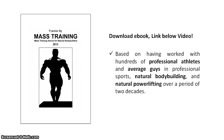The best hamstring exercises: Romanian deadlifts or straight leg deadlifts — barbell or dumbbell — sumo deadlifts, glute ham raises, hyperextensions, good mornings, and leg curls. The best bicep exercises: standing barbell or dumbbell curls, preacher curls, seated dumbbell curls, incline dumbbell curls, hammer curls, concentration curls, cable curls, or the curl machine.